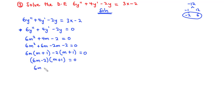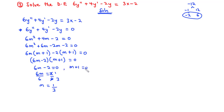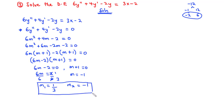So we have (6m − 2)(m + 1) = 0. From 6m − 2 = 0: 6m = 2, so m = 1/3. From m + 1 = 0: m = −1. Therefore m₁ = 1/3 and m₂ = −1.